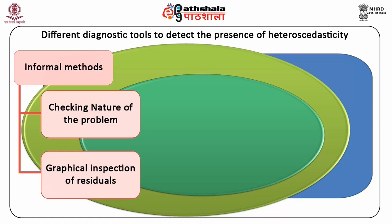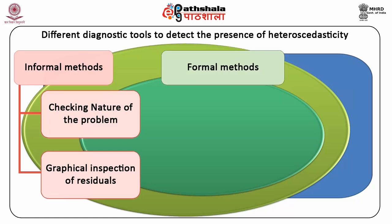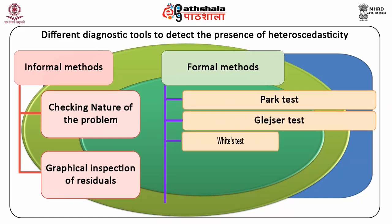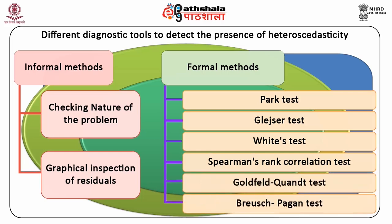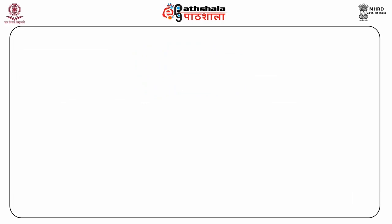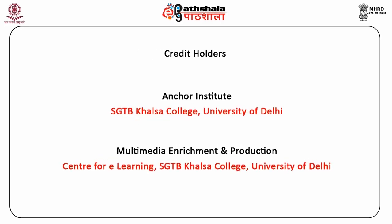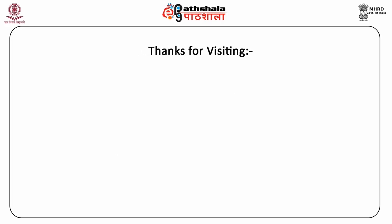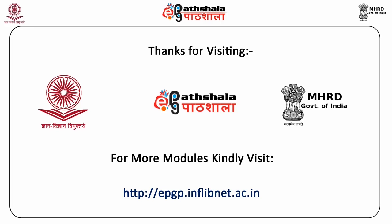In this module, we have seen different diagnostic tools to detect the presence of heteroscedasticity. These tools are divided into two parts: informal tests and formal tests. The informal methods include detection of the nature of the problem and graphical inspection of the residuals. In cross-sectional data involving heterogeneous units, heteroscedasticity may be the rule rather than the exception. The informal methods give a clue of the presence of heteroscedasticity, and its conformity can be done by using the formal methods, which include the Park test, Glejser test, White's test, and Spearman's rank correlation test.